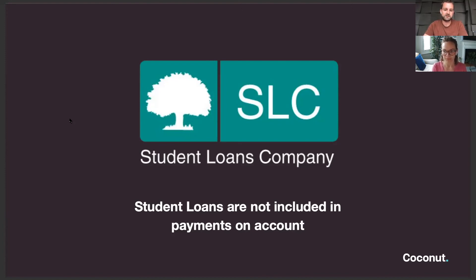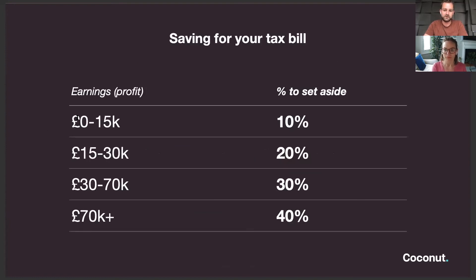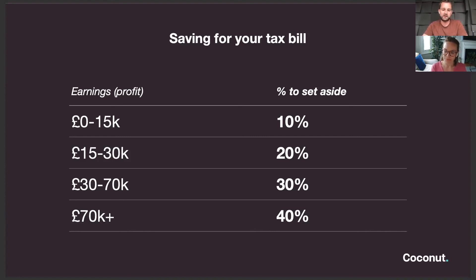The key to avoiding being caught out with payments on account is having a good strategy to set aside money for your tax bill as you go — for example, into a savings account on a regular basis. The amount of tax will vary based on your earnings, but a good rule of thumb is to set aside around 30% of your income. This will vary depending on how much you earn and whether you have a student loan. There are plenty of online calculators to get a more exact amount, and earnings bands can give you a guide on what proportion to set aside to make sure you've always got enough for your tax bill.